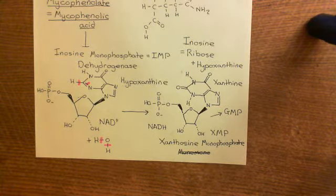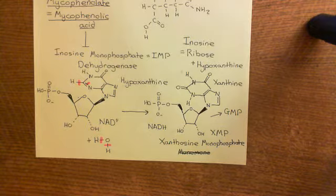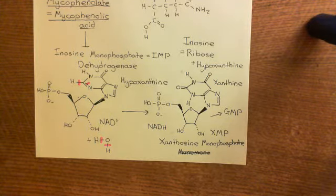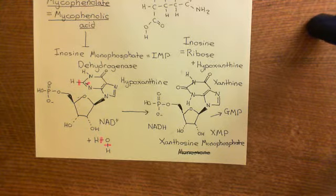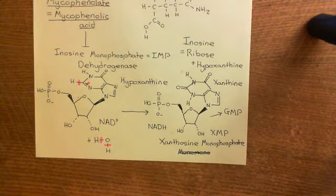If you block this conversion by blocking IMP dehydrogenase, you are going to stop the synthesis of guanosine triphosphate and also deoxyguanosine triphosphate, and therefore stop the production of mRNA and the production of new DNA strands. That is how mycophenolate blocks the synthesis of new DNA and mRNA, and thereby prevents cell division.